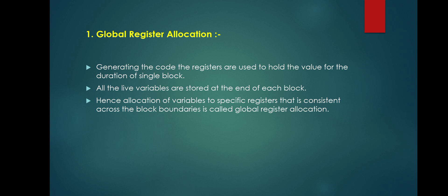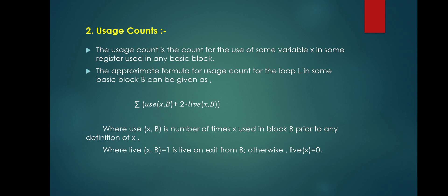Usage count is the most important concept among the strategies of register allocation and assignment. In usage count, we determine the cost of saving instructions. The formula is: usage count = Σ [ use(x, B) + 2 × live(x, B) ], where use(x, B) is how many times variable x is used inside a particular block B.